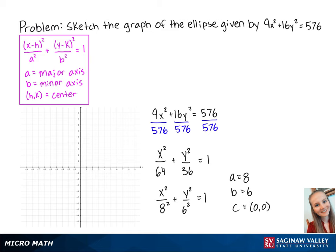Now we will plot the relevant points. The center is at 0, 0, and the major axis points will be a to the left and a to the right of the center. So the first point is at negative 8, 0, and the second point is at 8, 0.